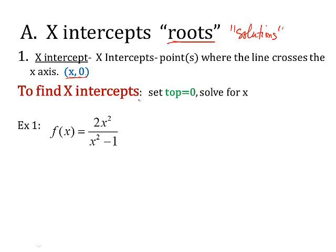To find the x-intercepts, you simply set the top, the numerator, equal to 0 and solve it for x. In this example, 2x² equals 0, divided by 2, x² is 0, so x is 0. Now, I don't leave my answer in this form. I make it a point, so (0, 0) is my x-intercept.